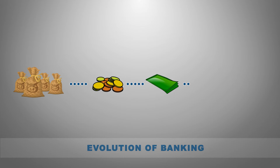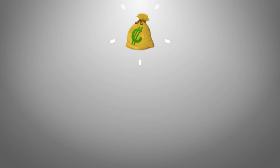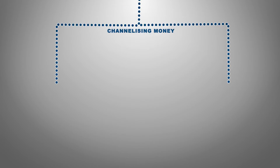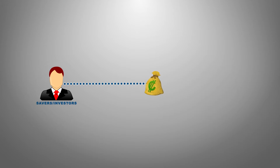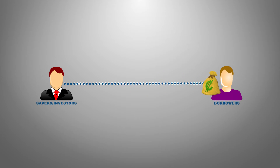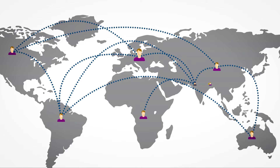Banking and financial markets encompass an ecosystem that channelizes money from those who have it — that is the savers and investors — to those who need it, that is the borrowers. Banks and financial markets also facilitate cross-border flow of funds through exchange of currencies.